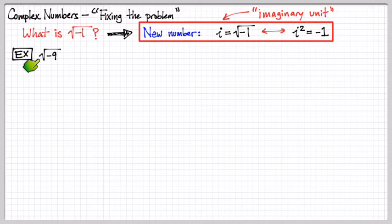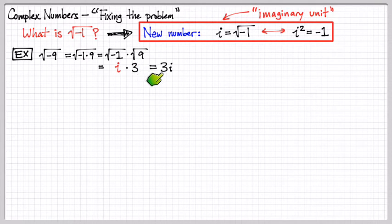Now we can deal with this problem. What is the square root of negative 9? Let's break this up into the square root of negative 1 times the square root of 9. And now we could say the square root of negative 1 is i. And of course, the square root of 9 is 3. So we write this typically, the convention is to write it like this, 3i with the imaginary unit on the right-hand side of the number.